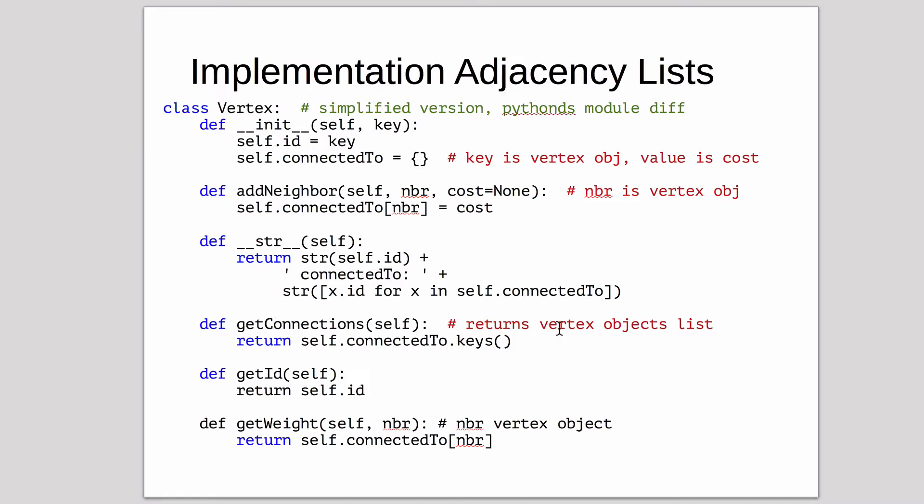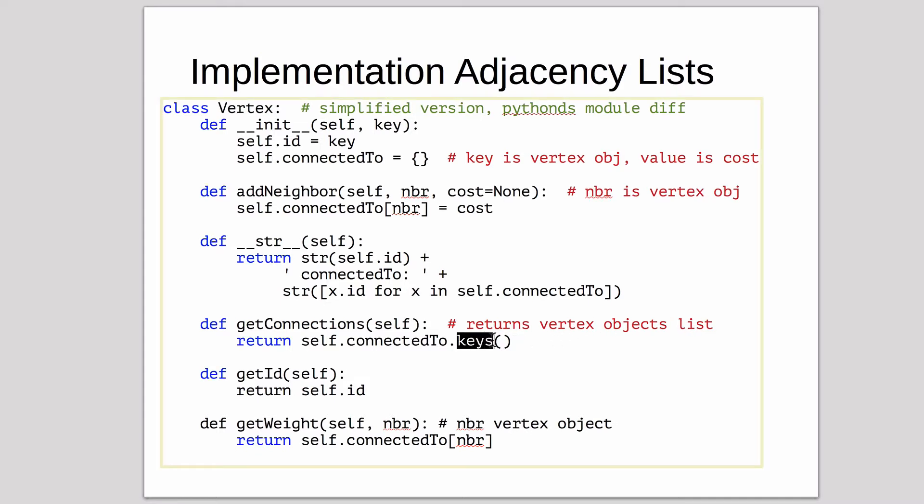There's getConnections, which returns a vertex objects list. So it's a list of all the vertex objects. When it says keys here, it's getting the actual vertex object, because that's what's stored as the vertex object.